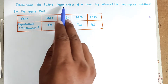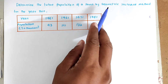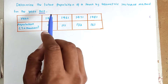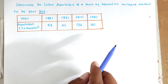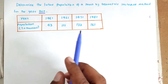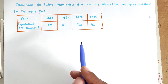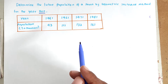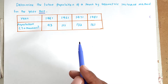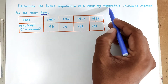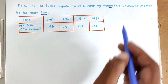The problem is to determine the future population of a town by the geometric increase method for the year 2011. There are four major methods available for finding out the population in the future: arithmetic method, geometric method, incremental increase method, and incremental decrease method. Here we will use the geometric increase method.